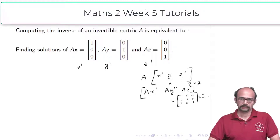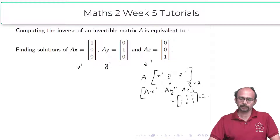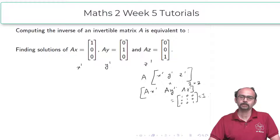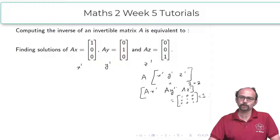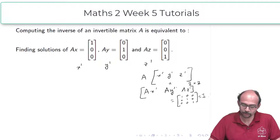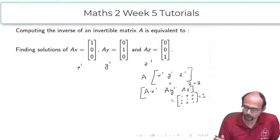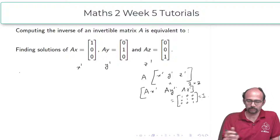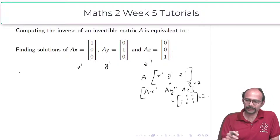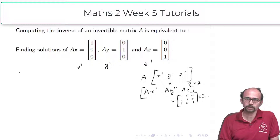Conversely, if A times B is identity, then the first column of B is a solution of Ax = (1,0,0), the second column is a solution of Ay = (0,1,0), and the third column is a solution of Az = (0,0,1). You can already see that finding these solutions is exactly what Gaussian elimination does for us.